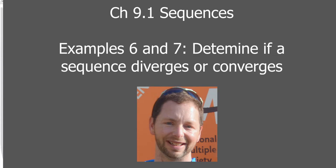This is section 9.1, sequences, examples 6 and 7: determining if a sequence diverges or converges. A divergent sequence doesn't have a limit. We're going to use the limit process to determine if a sequence diverges or converges. If a sequence doesn't converge to a particular number, it won't have a limit. But if it does converge, as n goes to infinity, we get some real number, which textbooks usually call L.